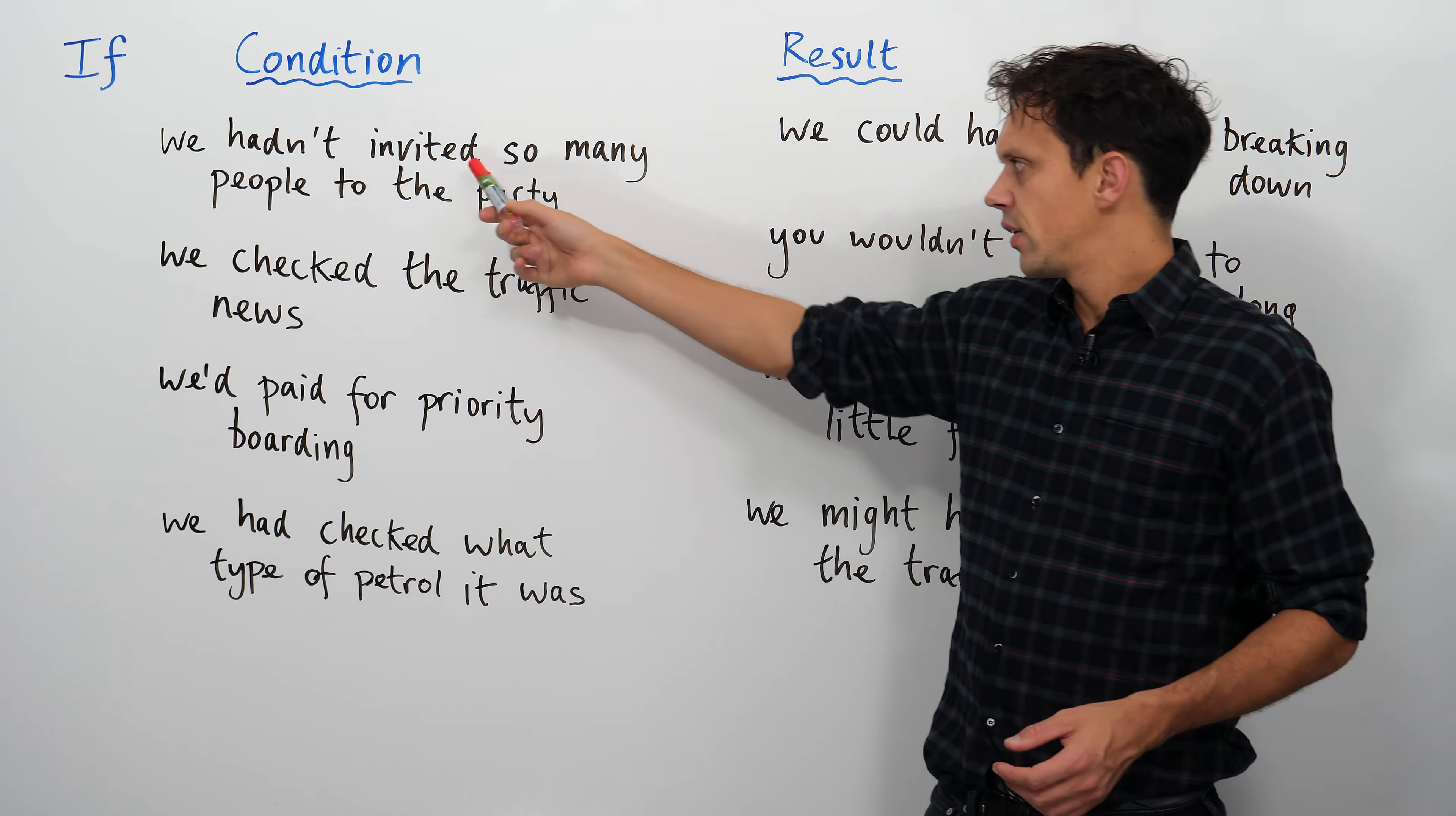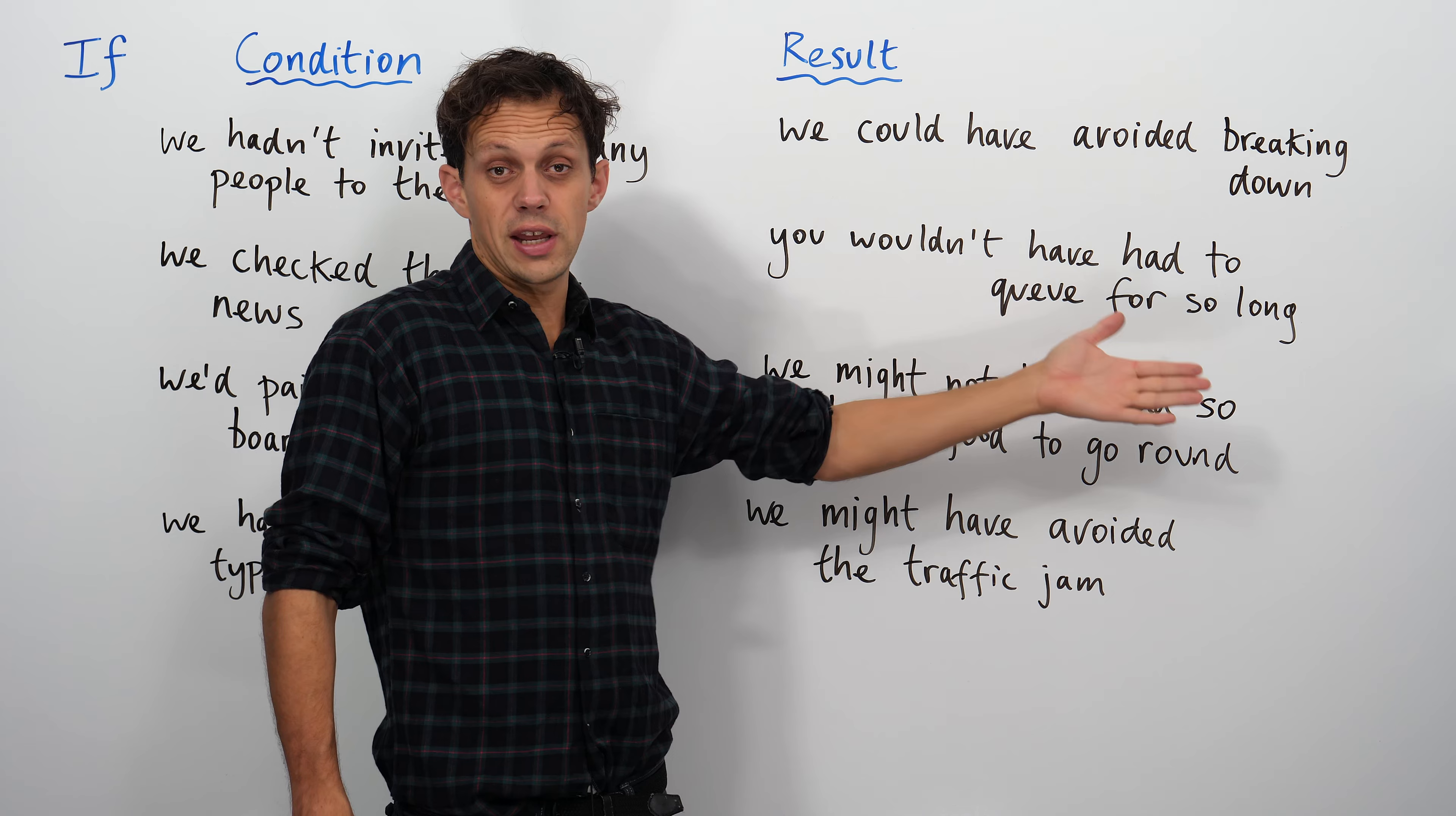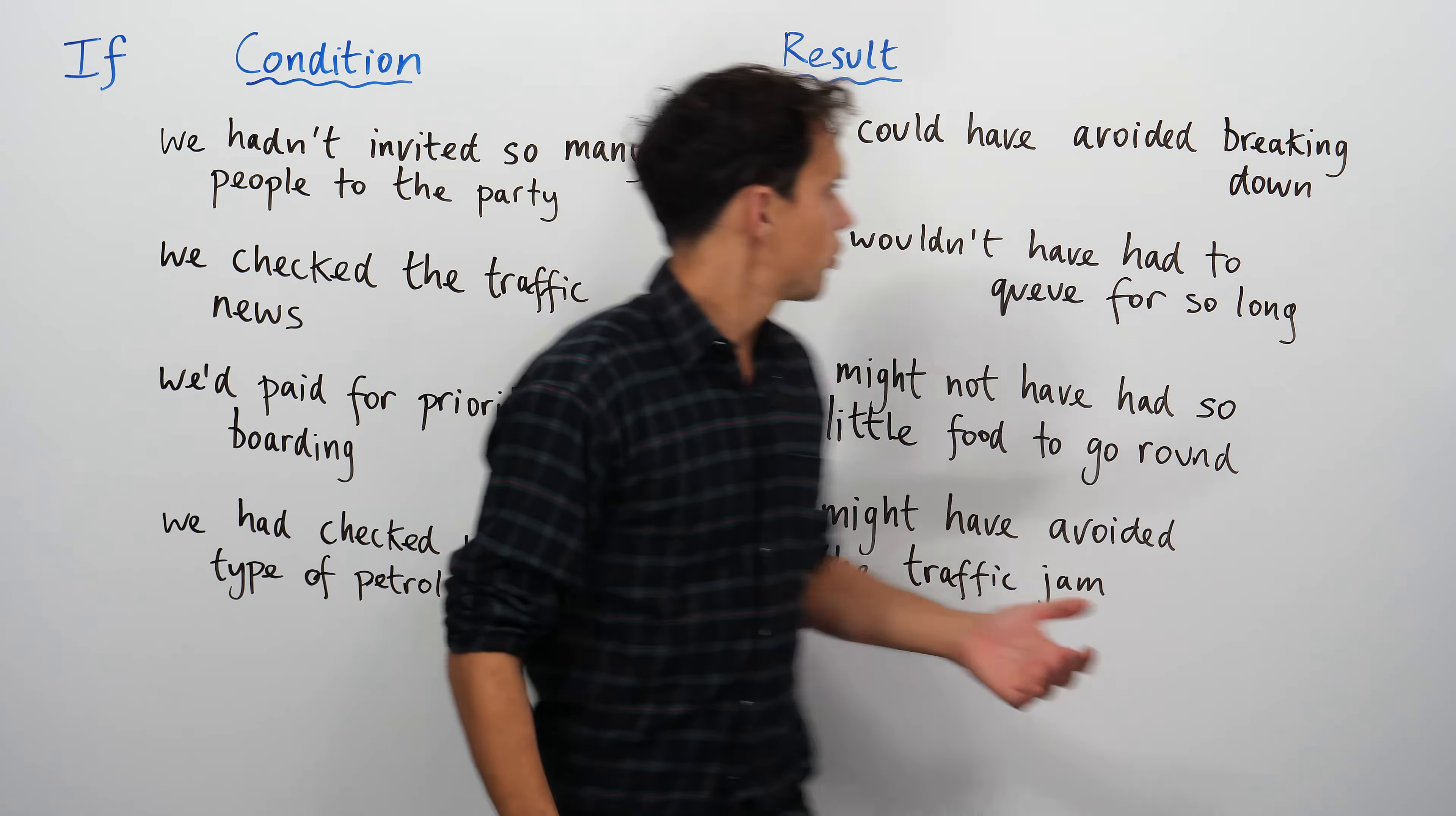If we hadn't invited so many people to the party, what would have happened? Could have avoided breaking down. Emotional breaking down or traffic breaking down? No, I don't think that's it. You wouldn't have had to queue for so long. North American, you say line instead of queue. No, it's not about queue. Ah, something about food. That's about entertaining hospitality. If we hadn't invited so many people to the party, if we had not invited... So they invited loads of people to the party, what was the result?